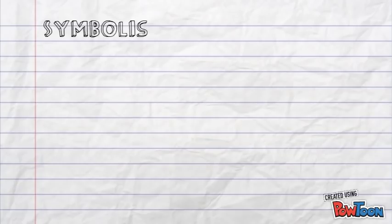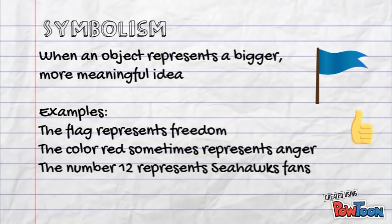We learned symbolism on that day that Ms. Corbin and I switched our classes. But remember, symbolism is when an object represents a bigger, more meaningful idea. Like the flag, we talked about how for some it represents freedom. We talked about the color red, and how sometimes it represents anger or love.